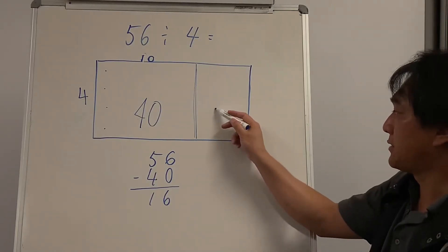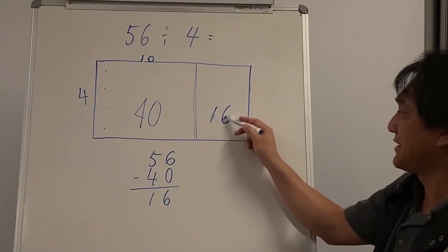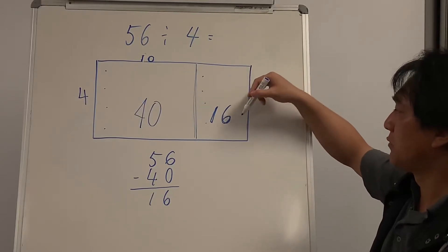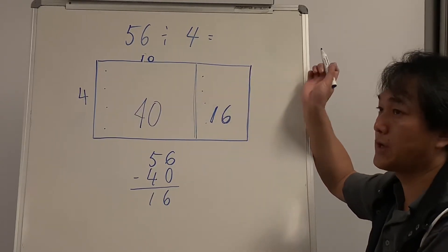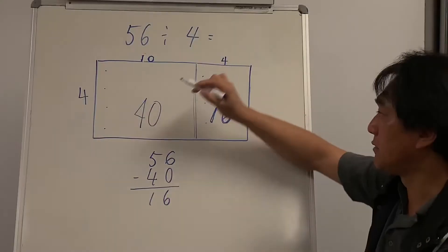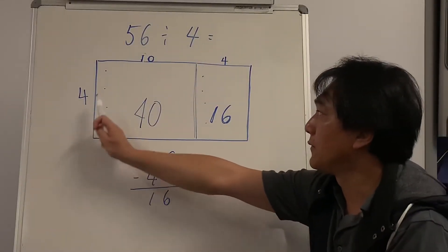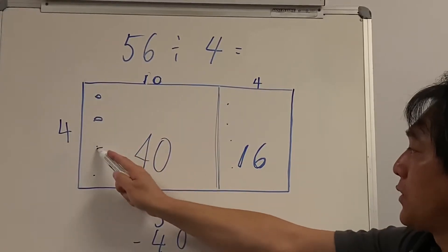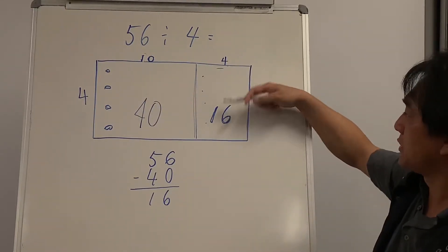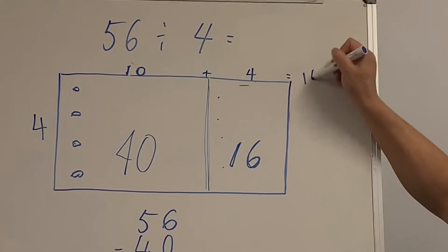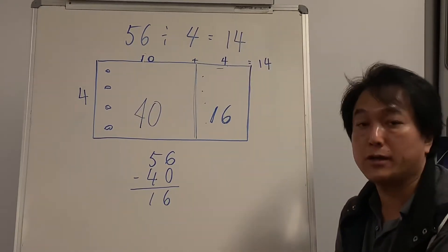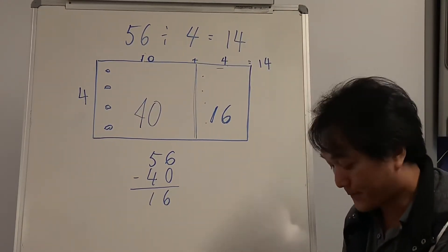I used 40 out of 56 — what's left? That is 16. So there must be 16 in this box. I have four rows — how many fours make 16? 1×4=4, 2×4=8, 3×4=12, 4×4=16. So I made 10 columns in the first box and 4 columns in the second box — 14 columns total. So 4 times 14 equals 56.